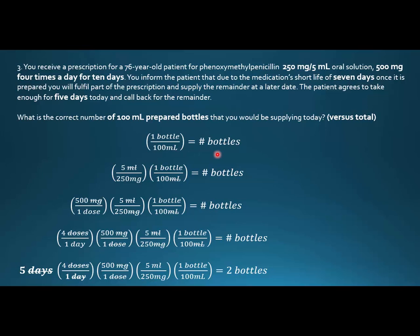There's only one conversion: 100 ml is one bottle, so I put that there. Now I have bottles, but I have ml and I need to get rid of those. I only see 250 milligrams per 5 ml, and I can put this upside down — 5 ml over 250 milligrams — to get rid of the ml. But now I have milligrams, and I see 500 milligrams here.